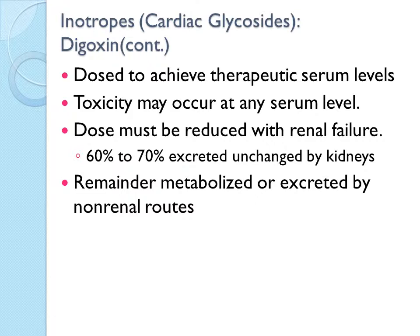The administration of digoxin requires the nurse to thoroughly assess the patient's cardiac status. The nurse must assess the apical pulse for one full minute. If the rate is less than 60 beats per minute in adults, 70 beats per minute in older children, or 100 beats per minute in younger children, the dose is omitted and the healthcare provider is notified. Before administering digoxin, nurses must check the apical pulse for a full one minute, and if it is less than 60 in older adults, hold the medication and communicate with the physician.